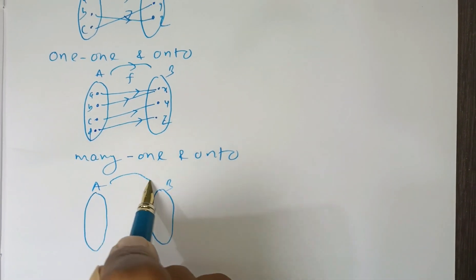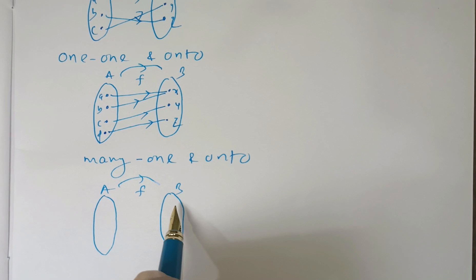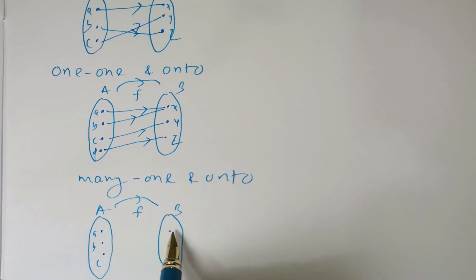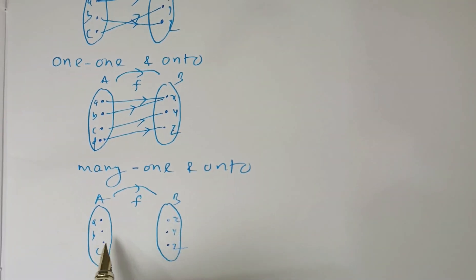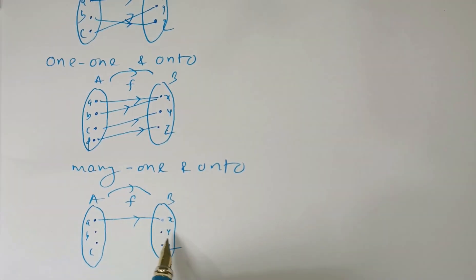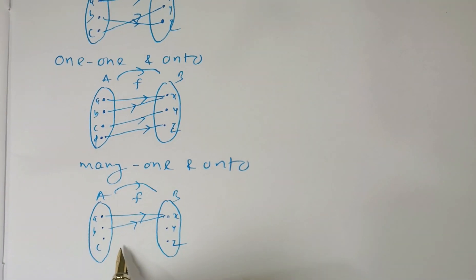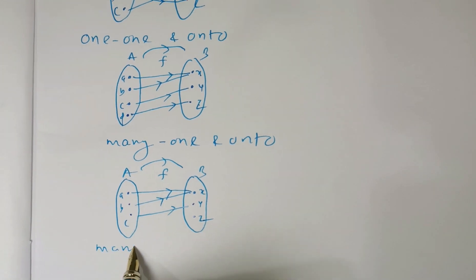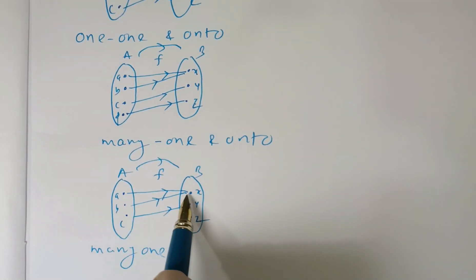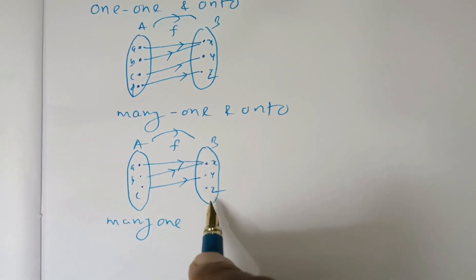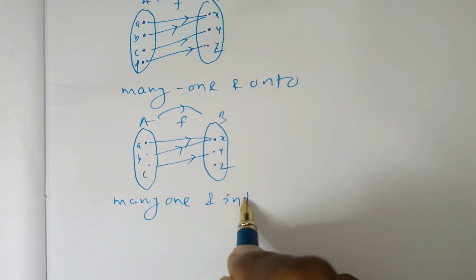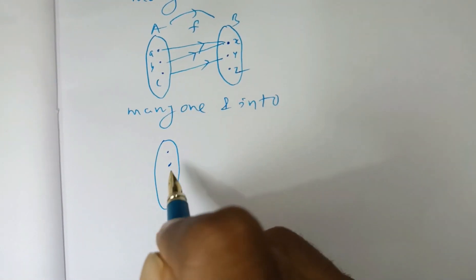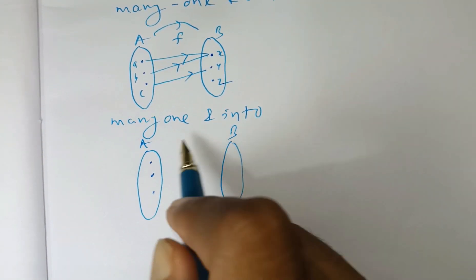Now consider the third picture. This is set A, this is set B, and there is a mapping from set A to set B. The pre-images are A, B, C and the images are X, Y, Z. Suppose X is the image of both A and B, and Y is the image of C, but Z is left behind. This is many-one because two pre-images A and B share the same image X, and it is not onto but into — this is the third type of function.